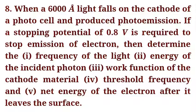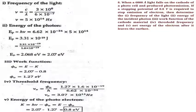We need to determine the frequency of the incident light and the energy of the incident photon. The frequency is found using c = νλ, where c is the speed of light.